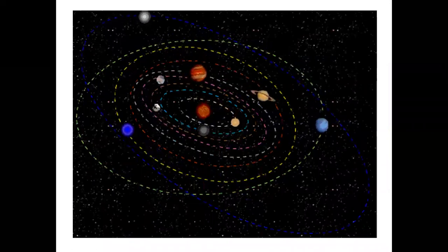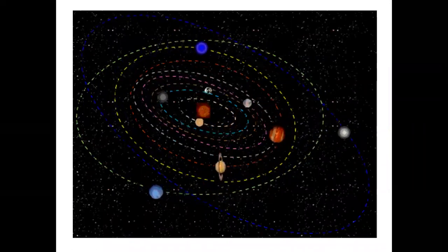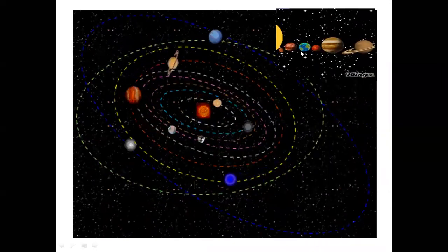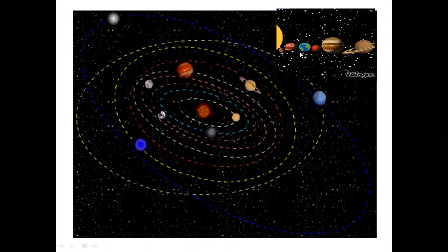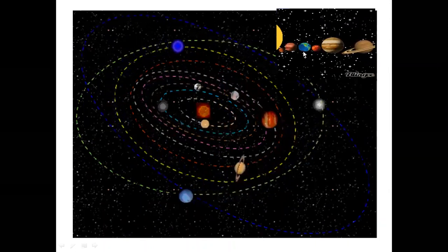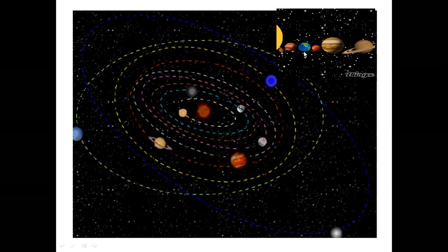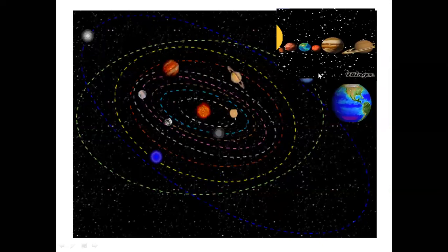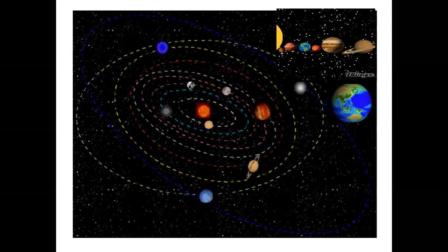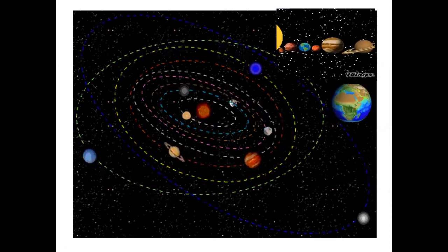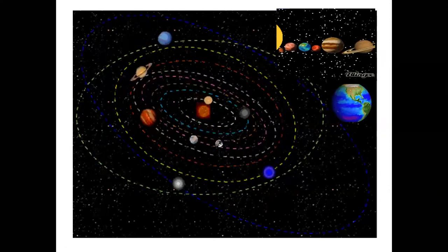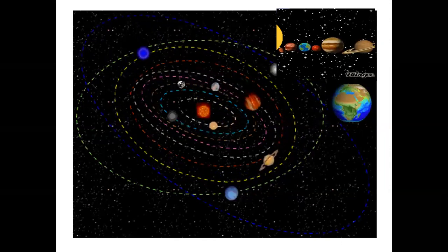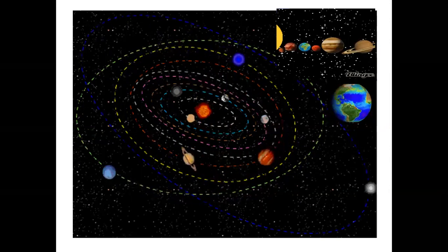The Earth belongs to the solar system — it is the third planet away from the Sun. Our whole planet is a rocky terrestrial planet with a solid and active surface featuring mountains, valleys, canyons, plains, and so much more. It is special because it is an ocean planet, with water covering 71% of Earth's surface.